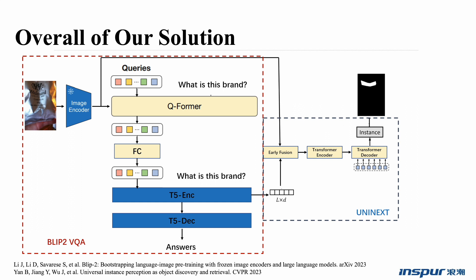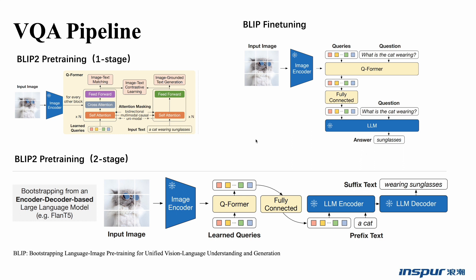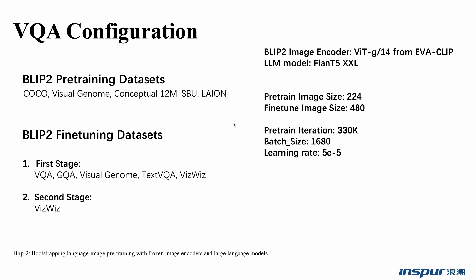The whole pipeline consists of two stages: first, BLIP2 VQA model training, and second, the end-to-end training phase combining BLIP2 and the UniInex model. We trained the BLIP2 model according to the paper. Pre-training consists of a vision-language representation learning stage and a vision-to-language generative learning stage. For VQA fine-tuning, the Q-former module receives the question as a condition, such that the extracted image features are more relevant to the question. The image encoder is a ViT Giant model from EVA-CLIP, and the LLM is FlanT5-XXL. Pre-training data is the same as the BLIP paper, pre-train image size is 224 while the fine-tune image size is 480. The pre-training iteration is 330K, batch size is 1680, and the initial learning rate is 5E-4.